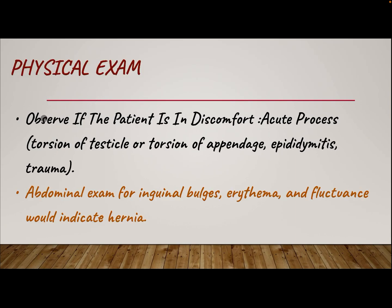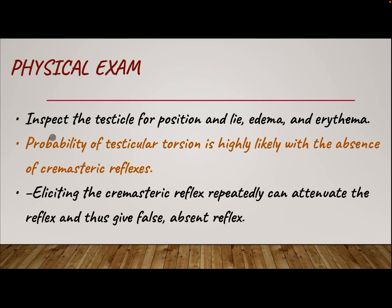Physical examination. Observe if the patient is in discomfort from an acute process — torsion of the testicle or torsion of the appendage, epididymitis, or trauma. Perform abdominal exam for inguinal bulges, erythema, and fluctuance, which would indicate hernia. Inspect the testicle for position, lie, edema, and erythema.